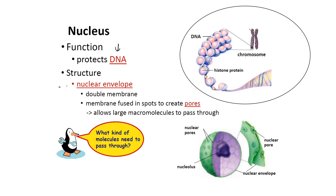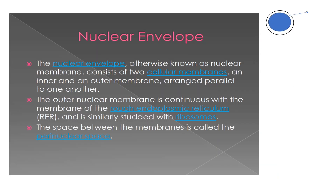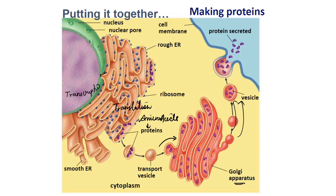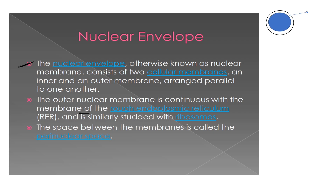The nuclear envelope protects the DNA. It is a double membrane structure. The outer nuclear membrane is continuous with the membrane of the rough endoplasmic reticulum. The two membranes fuse at spots to create pores, allowing large macromolecules to pass through. The space between the two membranes is called the perinuclear space.